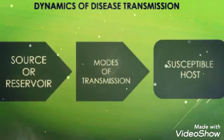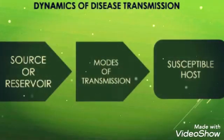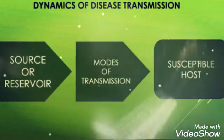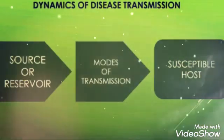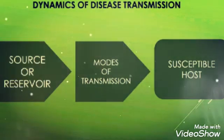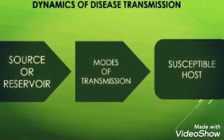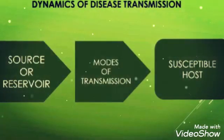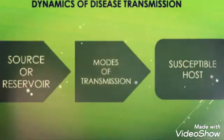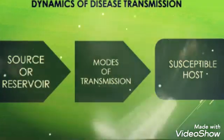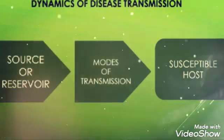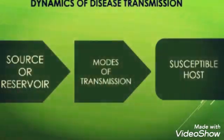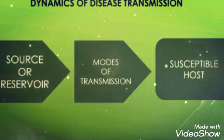Now we'll see the dynamics of disease transmission. Dynamic means changes and how it grows. It has three steps: source or reservoir, mode of transmission, and susceptible host. Source or reservoir means the place where the disease grows. Mode of transmission means through what medium it gets transmitted. Susceptible host is the person in which it gets nourishment, grows, and then becomes transferable from one person to another.